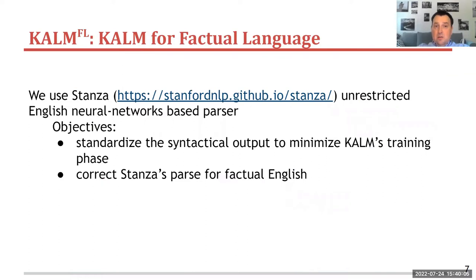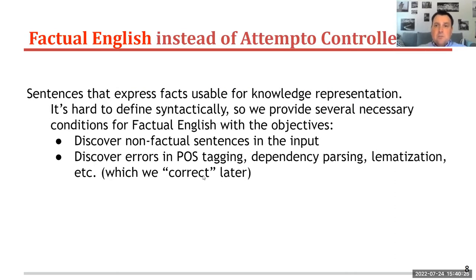We use Stanza, the follow-up for the Stanford CoreNLP project, as our neural network based parser. Our objective is to standardize the syntactical output to minimize the constraining phase and to correct Stanza's parse for factual English. What is factual English is actually quite difficult to define syntactically, so we provide several necessary conditions for sentences to be factual, with the objective to discover non-factual sentences and discover errors in POS tagging, dependency parsing, lemmatization, and so on, which we will correct later.